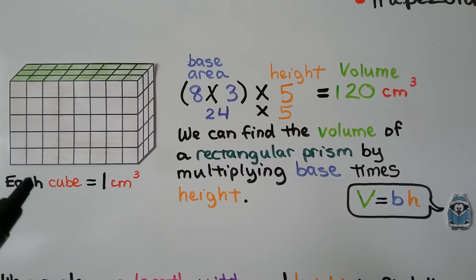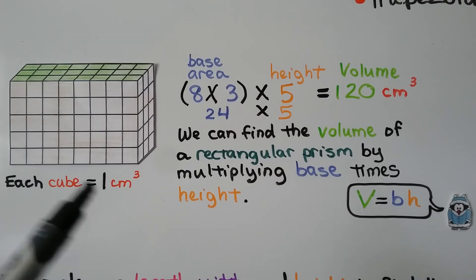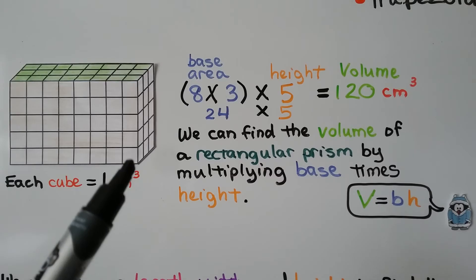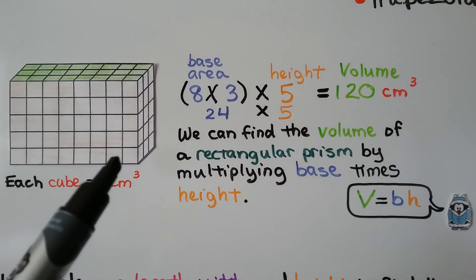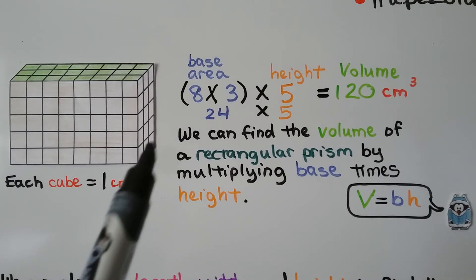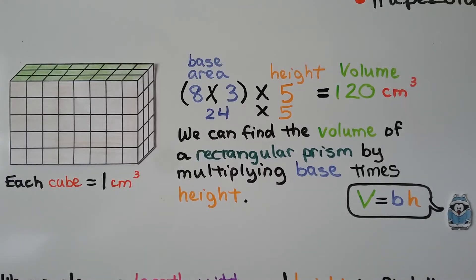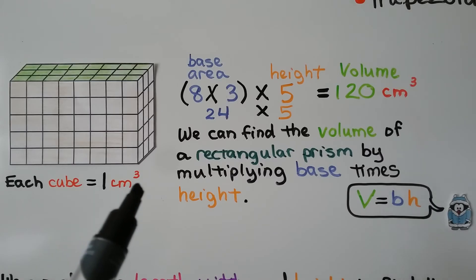In this rectangular prism, each cube is 1 centimeter cubed. The base area — counting along the bottom or the top, since either can be the base — is 8 units long and 3 units wide, so 8 times 3 means the base area is 24. We count the height: 1, 2, 3, 4, 5. We multiply 24 times 5, and that gives us a volume of 120 centimeters cubed.